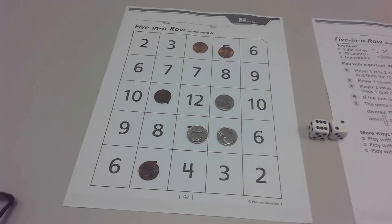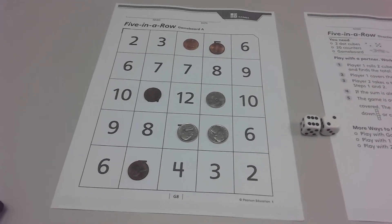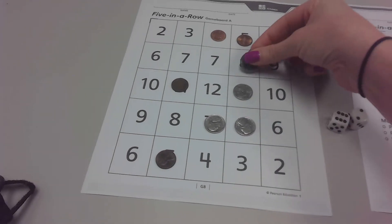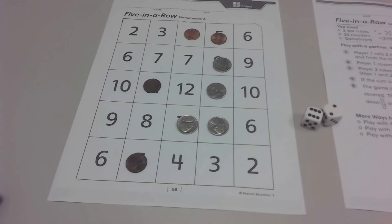Six and two. If I have six, seven, eight. Ooh. All right. And that's how you play Five in a Row.